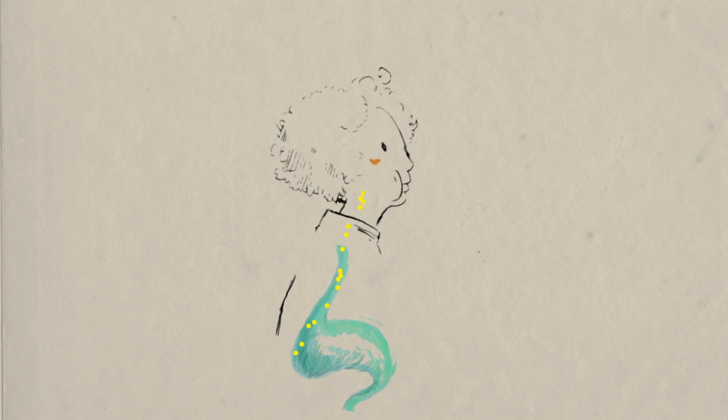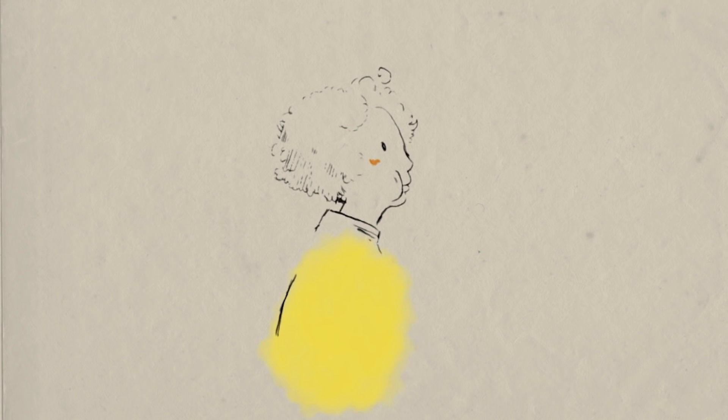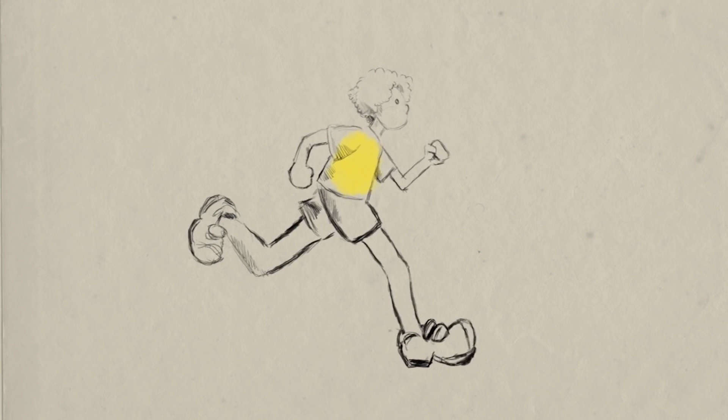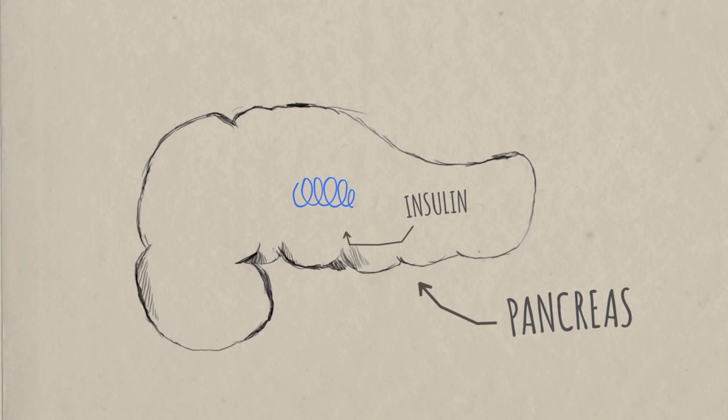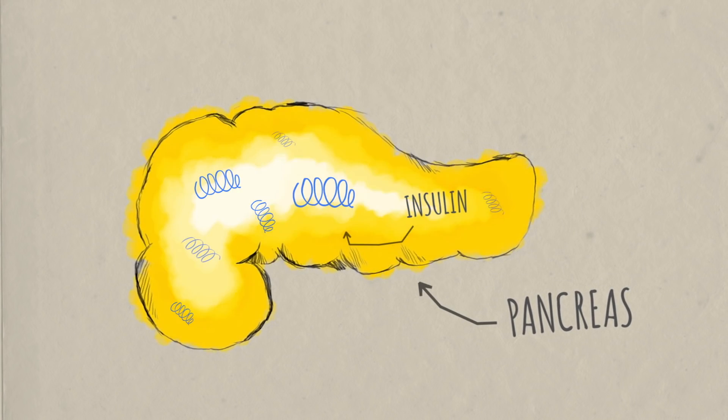When sugar moves from the digestive tract to the bloodstream, your body kicks into action to transfer it into your tissues, where it can be processed and used for energy. Insulin, a hormone synthesized in the pancreas, is one of the body's main tools for sugar management.